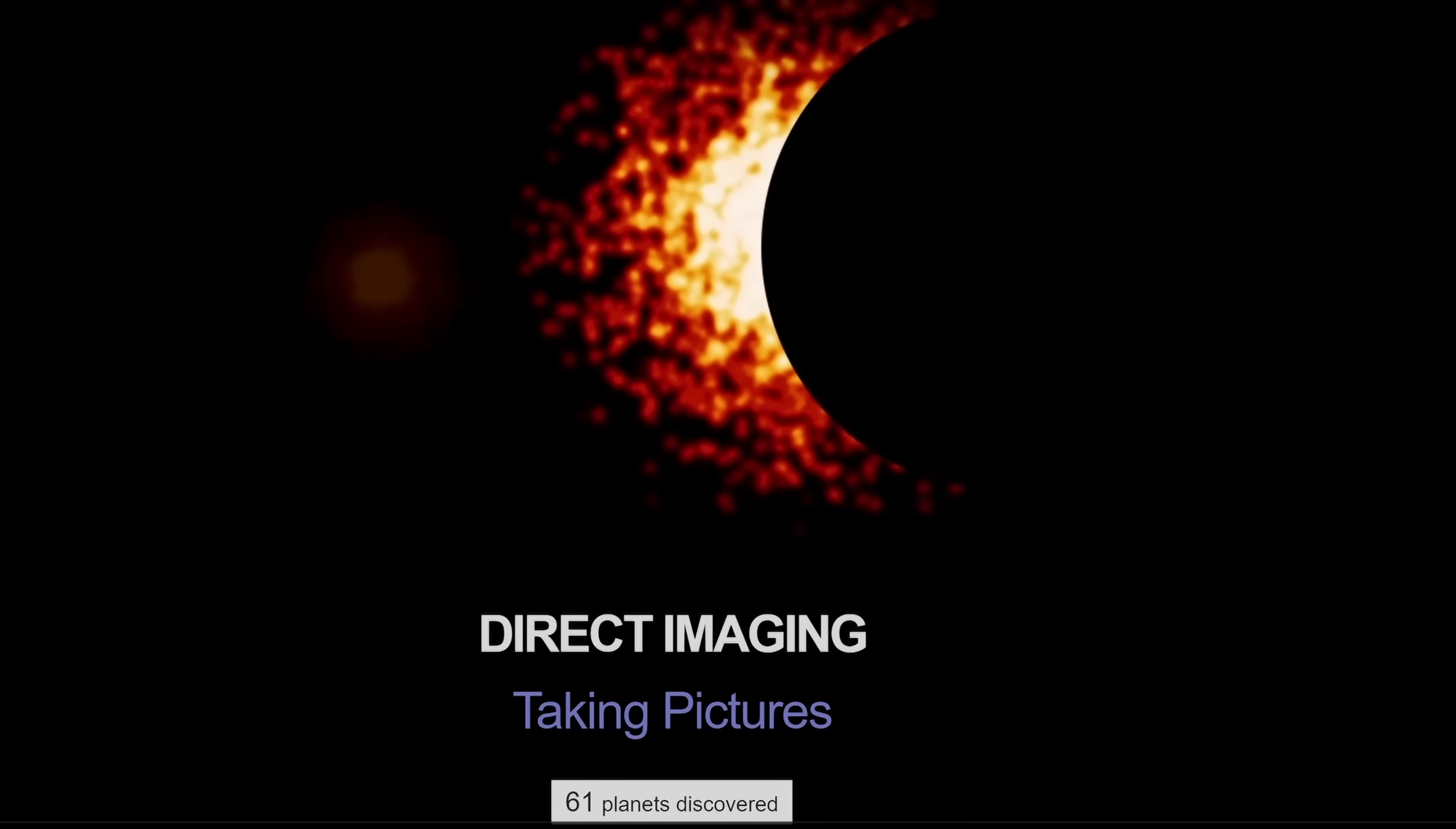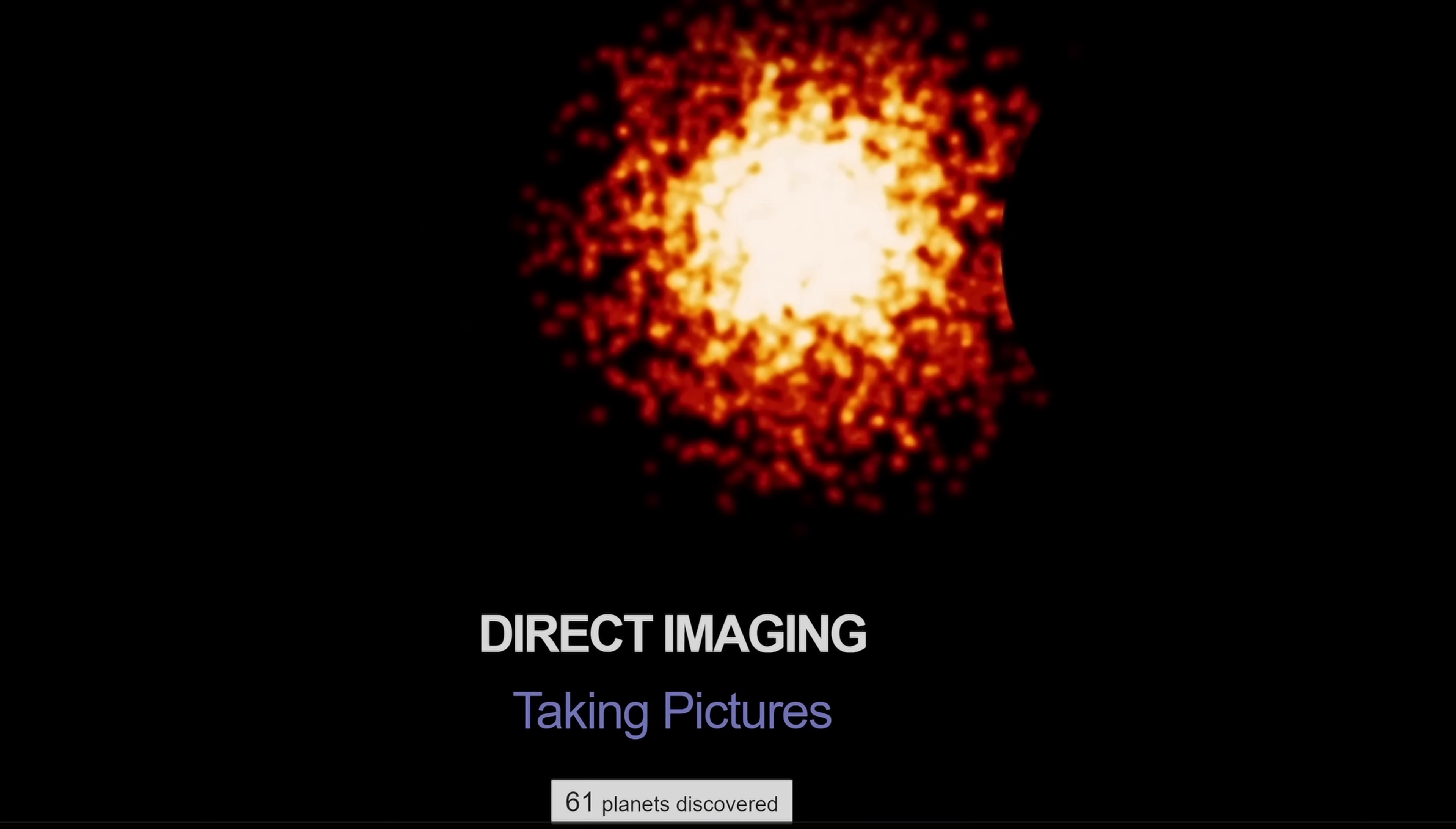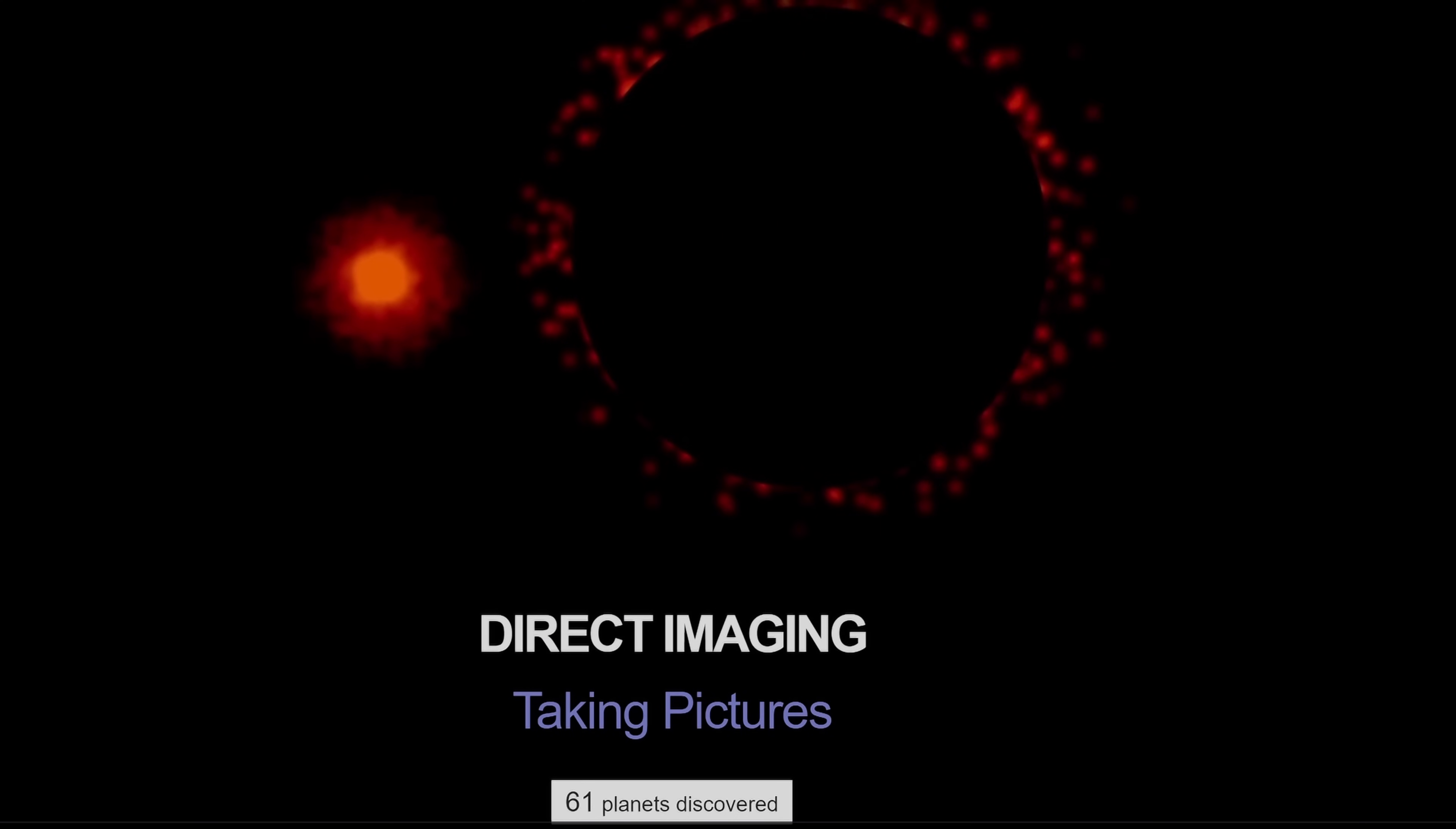Then we have the direct imaging method, where scientists essentially cover the star to discover the planet by trying to see it directly. The James Webb telescope was officially able to do so very recently. But this relies on two assumptions. First, the planet has to be pretty far away from the star. And second, it has to be warm enough to produce the right frequency of light for us to see it, usually infrared frequencies. That means the planet has to be massive enough to have enough internal heat. This usually applies to Jupiter-like planets or something even more massive than Jupiter.